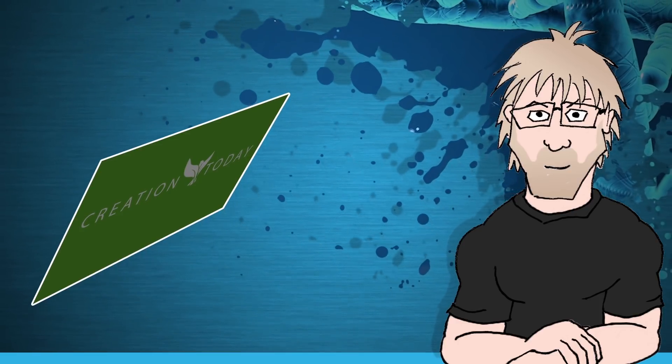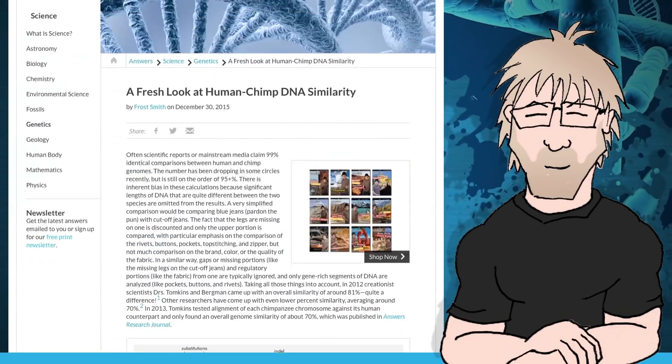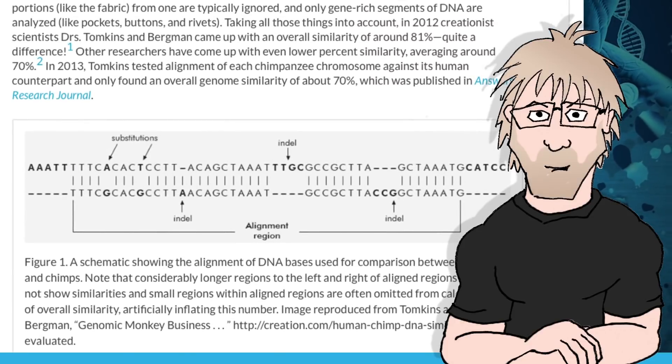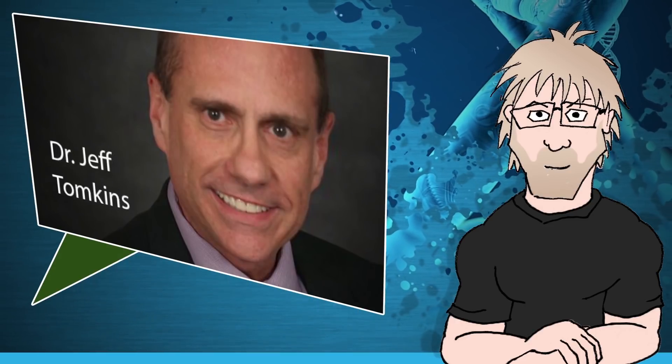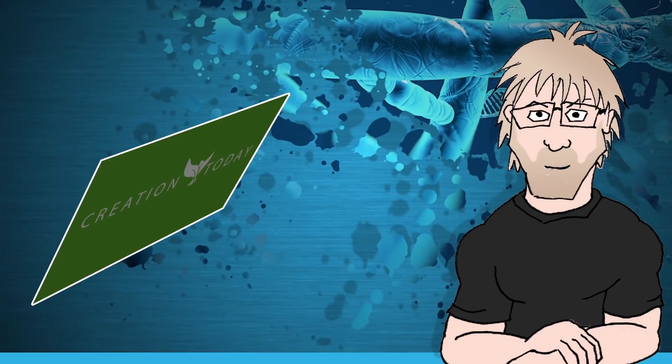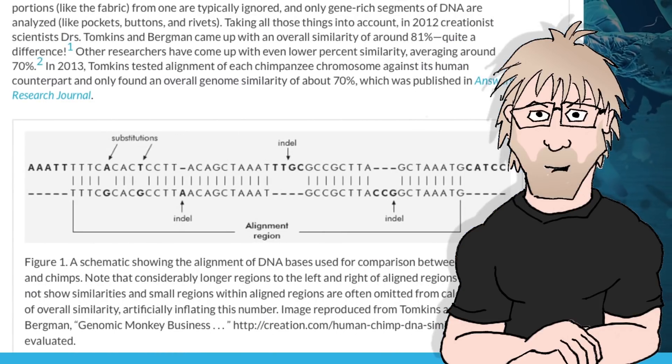Georgia doesn't specify where she's getting her statistics from, but as she works for Answers in Genesis, let's search for chimp DNA on the AIG website. The most recent article is from December 2015. According to that article, in 2012, creationist scientists Dr. Tompkins and Bergman came up with an overall similarity of around 81%. Shortly after, other researchers came up with an even lower percent similarity, averaging around 70%. There's Georgia's number.